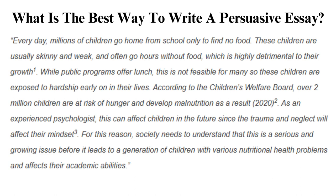Logos refers to logic and appeals to the reader's sense of logic. One should connect ideas logically and may use facts and statistics to do this. However, you should be careful to avoid logical fallacies, which refer to flawed or false arguments. An example is the correlation/causation fallacy, where one falsely attributes one thing as the cause of another. Pathos refers to the appeal to emotion. This is done using specific and vivid language that triggers certain emotional responses in the reader. It is a rhetorical device commonly used to evoke pity or sadness, but it can also help evoke feelings of hope or joy.